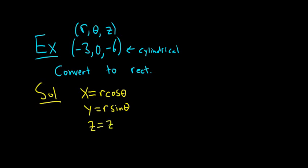So super easy. So r in this problem is -3. Theta is 0, so we get cosine of 0. And so here this will be -3 times the cosine of 0 is 1. So this is just -3.